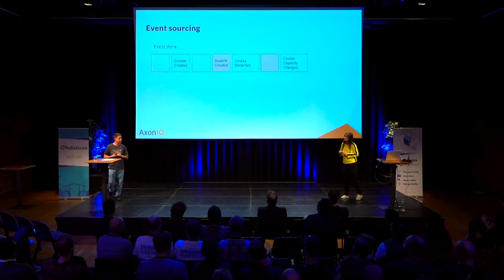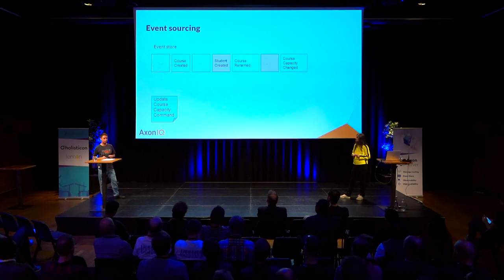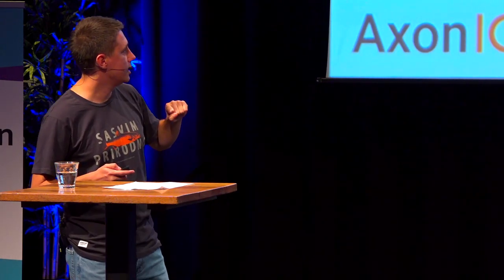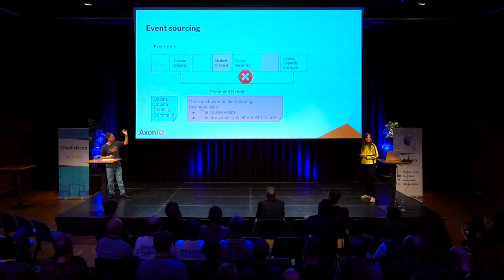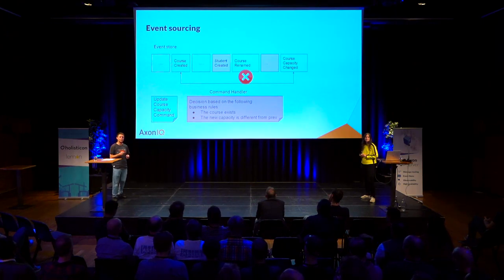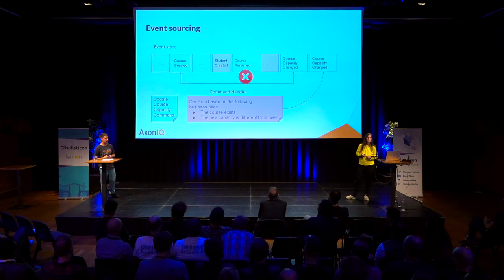Let's look at an example. Here we have our event store with events for the course and the student. To execute the update course capacity command, our decision block used to be an aggregate loading all events related to the course. But we know course renamed is not necessary for this command handler — it just needs to see whether the course exists and whether the new capacity differs from the previous one. So we load only what we need, then decide whether to issue a new event.